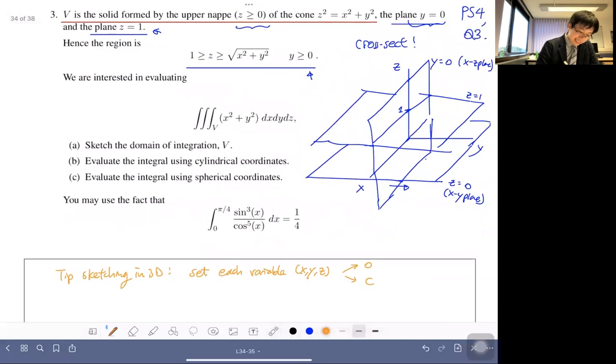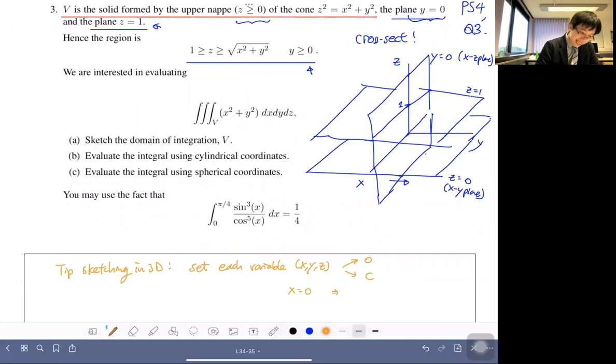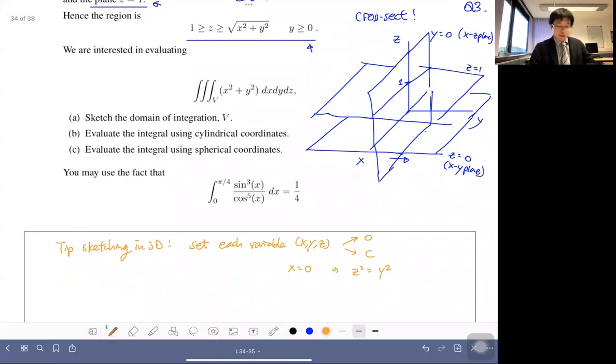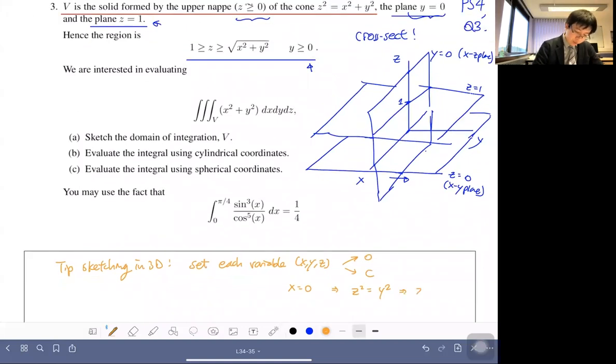If I set, let's say, I set x equals zero, what do I get? Then I get z equals y squared, z squared equals y squared. So what's z plus or minus y?